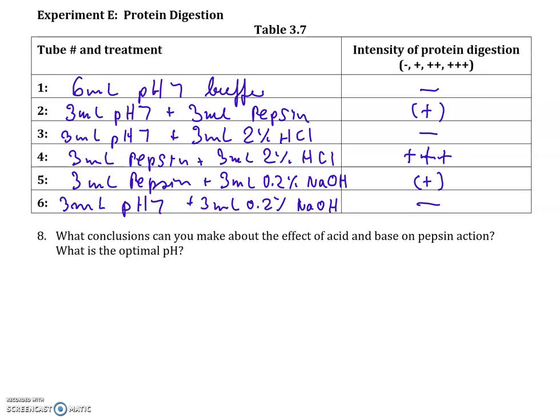Test tube 5 had 3 mL of pepsin plus 3 mL of sodium hydroxide — the wrong pH, going in the wrong direction. Like test tube 2, sometimes you get a little digestion because pepsin can work slightly at the wrong pH. Test tube 6 had pH 7 buffer plus sodium hydroxide and no enzyme, so no digestion expected — it should be negative. Acid definitely helps pepsin because this enzyme is normally found in the stomach, where pH is about 2 due to hydrochloric acid. The optimal pH for pepsin is approximately 2 to 3.